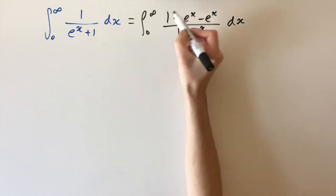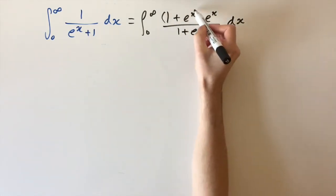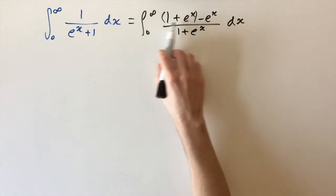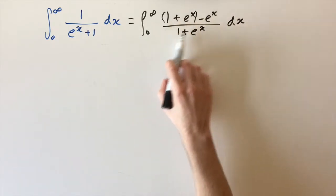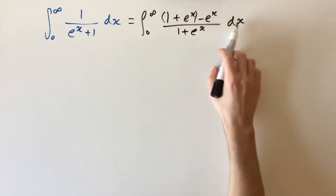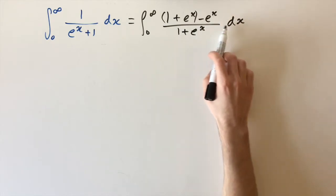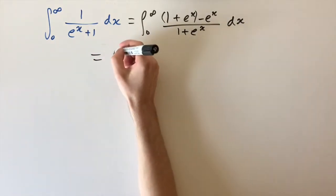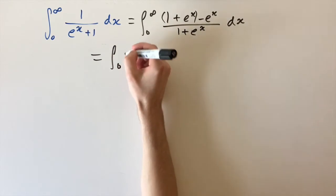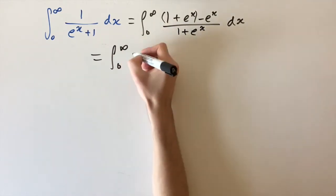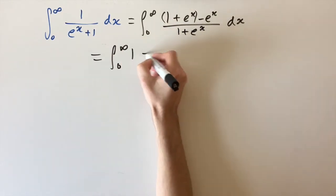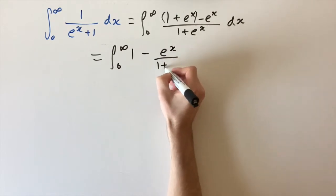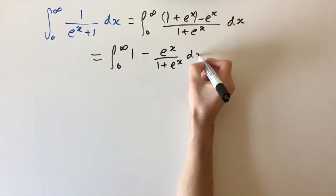The reason I did that is because we can now split this fraction. The first two terms cancel with the denominator, giving us 1, and then the second fraction gives us minus e to the x over 1 plus e to the x. So the integral between 0 and infinity is 1 minus e to the x over 1 plus e to the x dx.